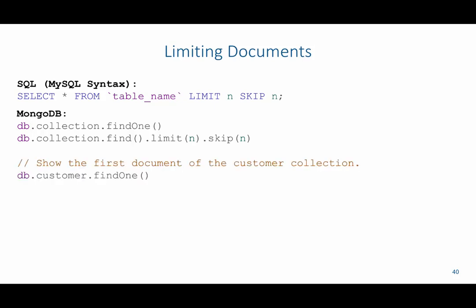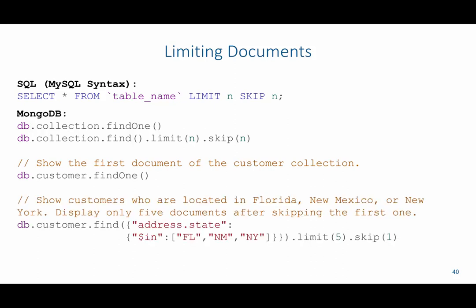To show the first document in the customer collection we'd say db.customer.findOne. To show customers located in Florida, New Mexico, or New York and display only five documents after skipping the first one, we'd say db.customer.find with address.state $in Florida, New Mexico, or New York, then .limit(5).skip(1).